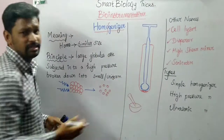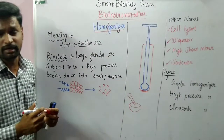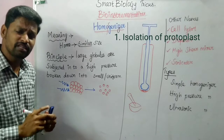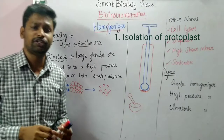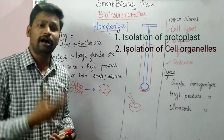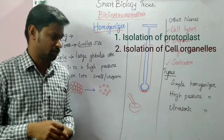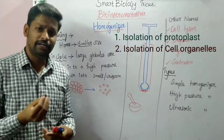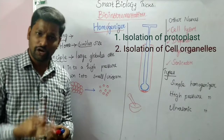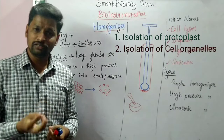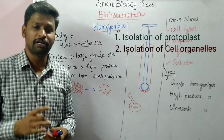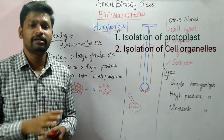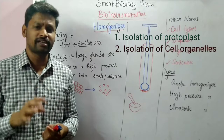Where do we use the homogenizer? For protoplast fusion or cell organelle isolation — such as mitochondria, lysosomes, peroxisomes, and endoplasmic reticulum. These cell organelles can be isolated using this instrument.